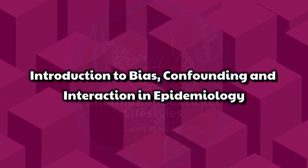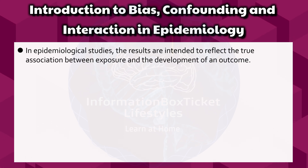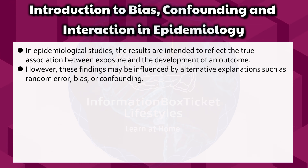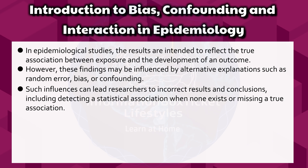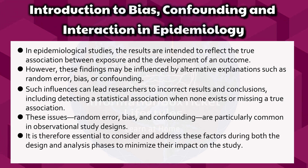Introduction to Bias, Confounding, and Interaction in Epidemiology. In epidemiological studies, the results are intended to reflect the true association between exposure and the development of an outcome. However, these findings may be influenced by alternative explanations, such as random error, bias, or confounding. Such influences can lead researchers to incorrect results and conclusions, including detecting a statistical association when none exists or missing a true association.